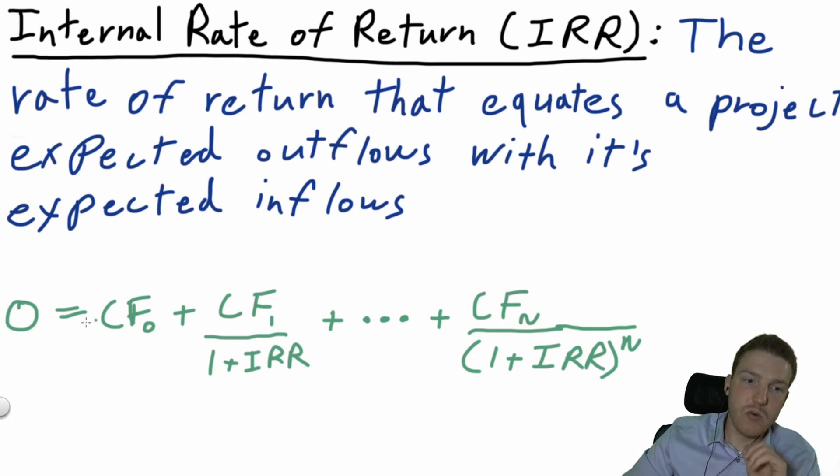You can see the formula: zero equals CF zero (cash flow at time zero) plus the cash flow at time one divided by one plus the IRR, and we do this all the way out to the last cash flow. We're finding the discount rate or interest rate that gets us a zero NPV. That's what IRR is.